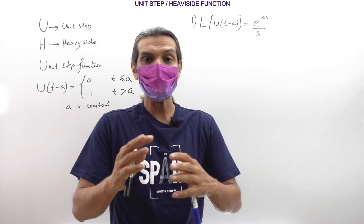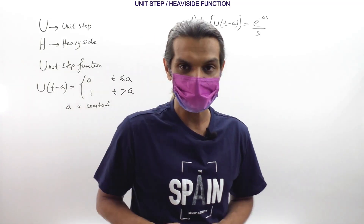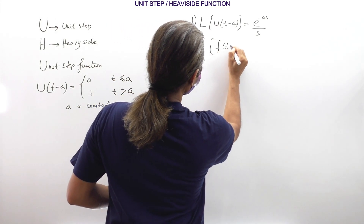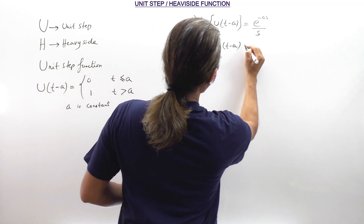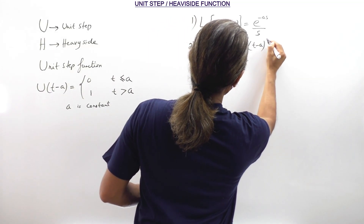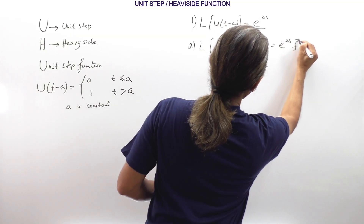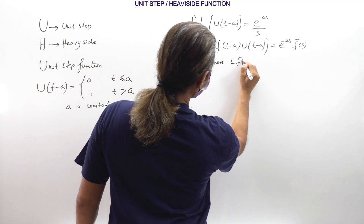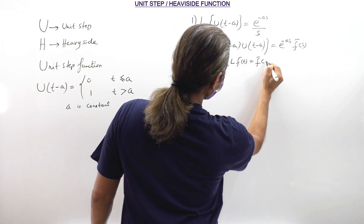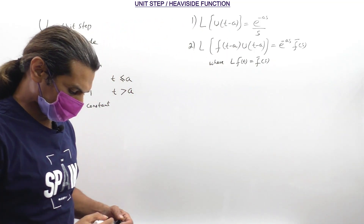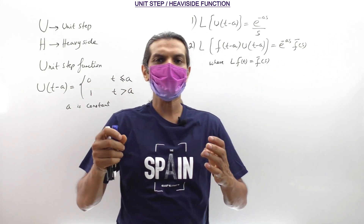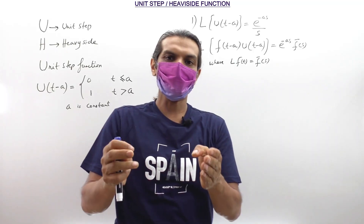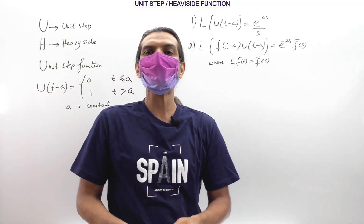The second property is very important as they ask this in the examination — one question for 6 to 7 marks. The property says: Laplace of F(t − A) into U(t − A) equals e raised to minus As into F-bar of s, where Laplace of F(t) is written as F-bar of s. This is a very important property, and I will show you how to apply it in a very easy way so you can get those 6 to 7 marks.